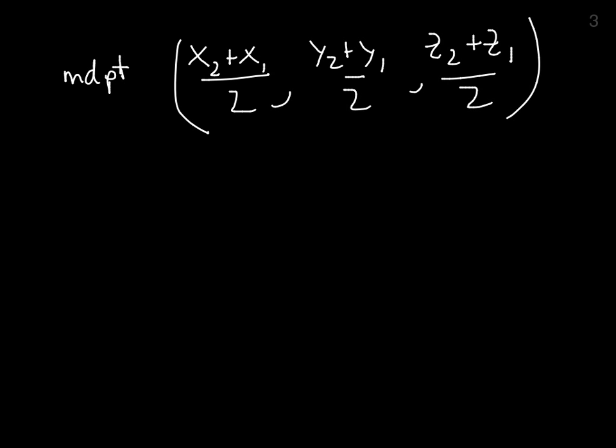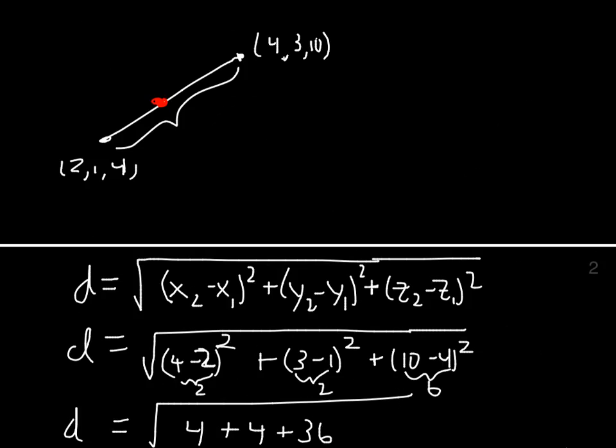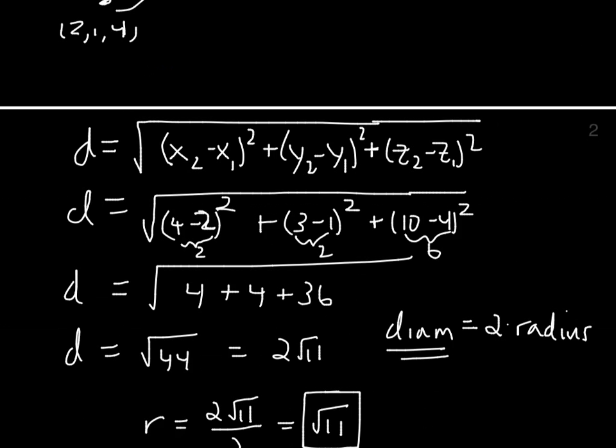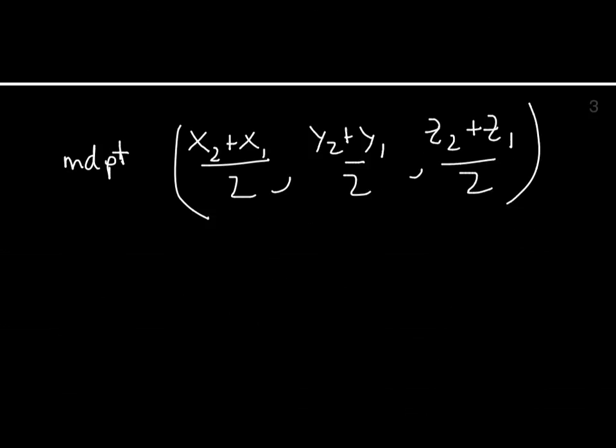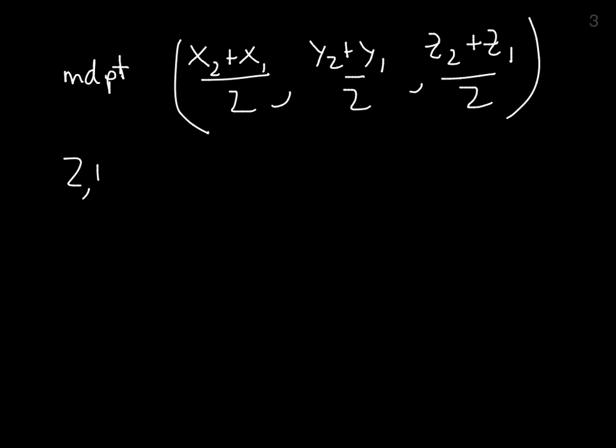Our two points again were (2,1,4) and (4,3,10). So our midpoint will be 6 over 2 for x, 4 over 2 for y, 14 over 2 for z.